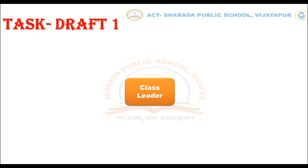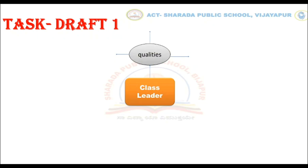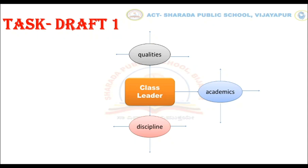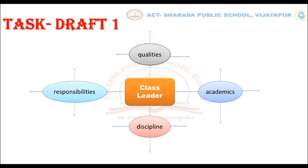Students, there is a task for you. You have to create draft 1 on the theme 'class leader.' To help you, I have given four parameters: Number 1 — qualities of class leader, including words related to character, behavior, and communication. Number 2 — academics, which includes marks and skills. Number 3 — discipline, including neatness in appearance and how the class leader manages books and uniform. Number 4 — responsibilities, which includes duties, problem-solving capabilities, and decision-making abilities. You should complete this task in a four-sheet and share it with your teacher.